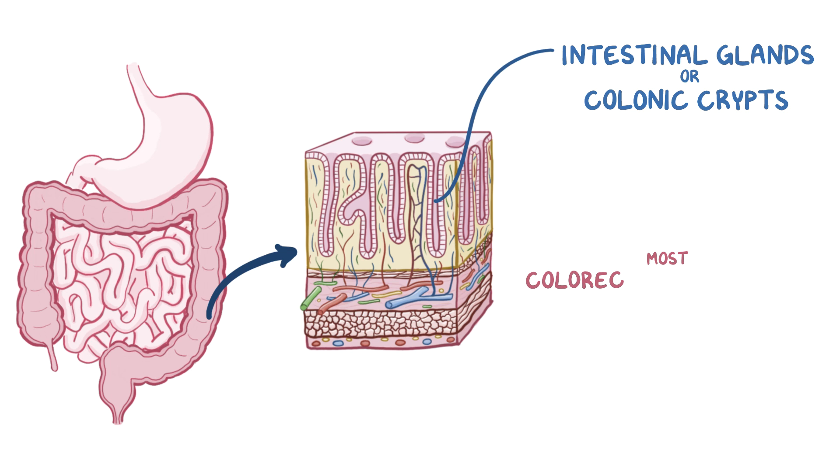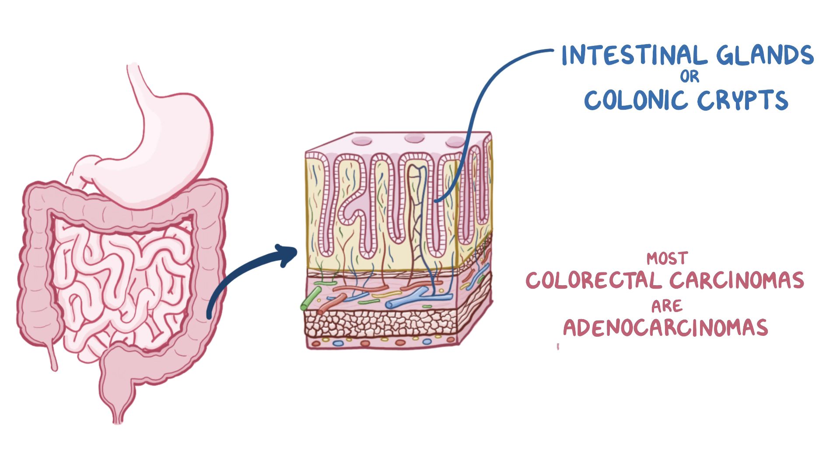Most colorectal carcinomas are adenocarcinomas, meaning that they arise from the cells lining the intestinal glands.